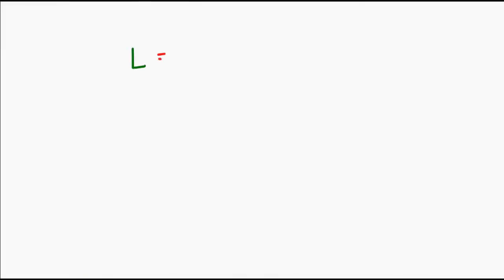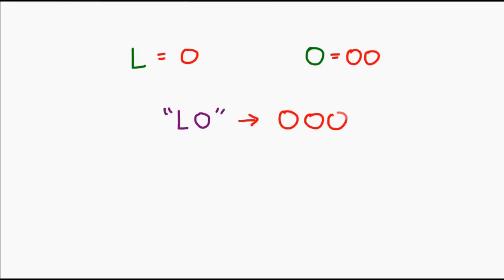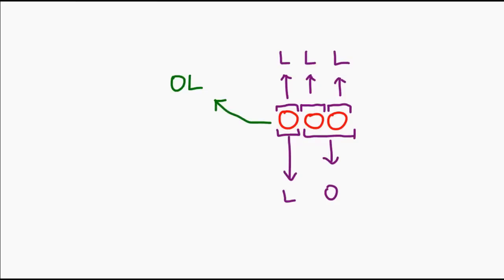Well, yes, that's all well and good, but reading them back is going to be a problem. In a simplified example, let's say we chose to represent L with 0 and O with the bit string 00. Therefore LO will be represented as 000. Put yourself in the decoding stage — all you see is 000, and unfortunately there is ambiguity as to what this represents. It could be LLL, it could be LO, it could also be OL. Because the characters are represented by differing lengths of bit strings, you don't know where the characters start and end.